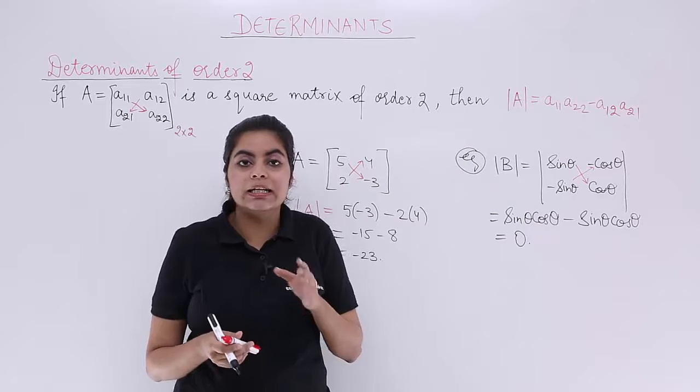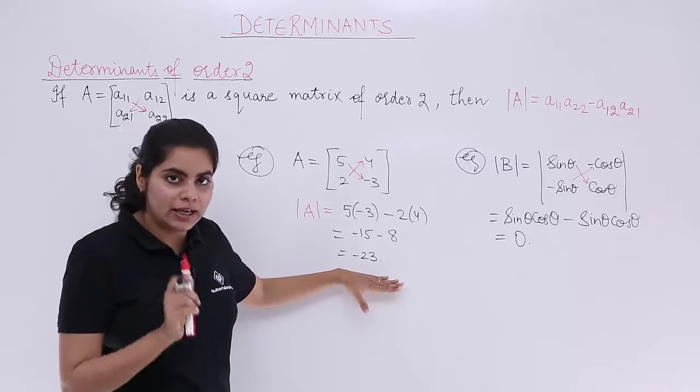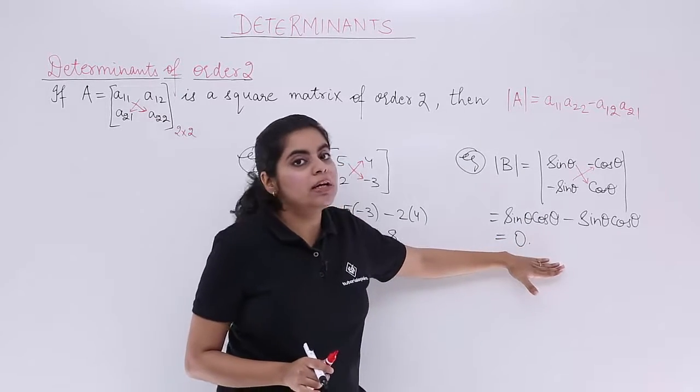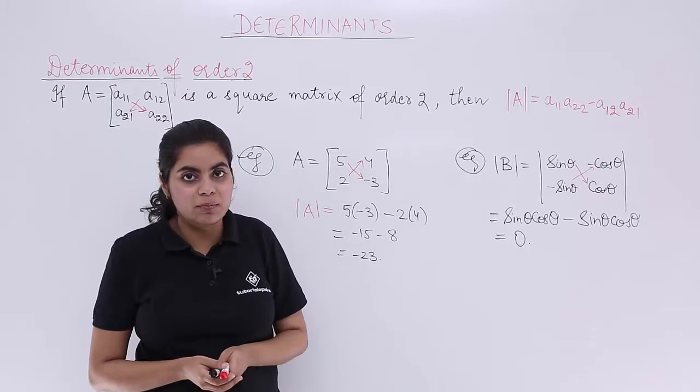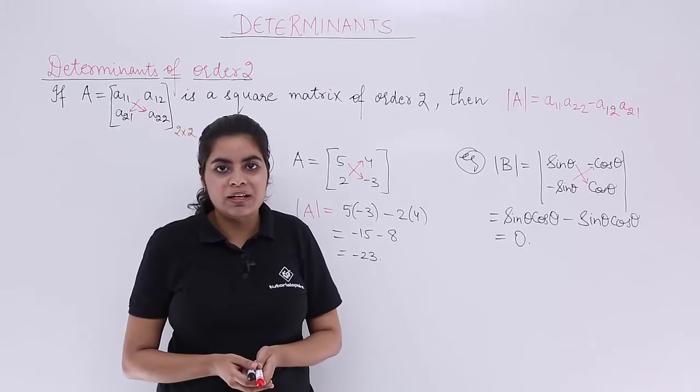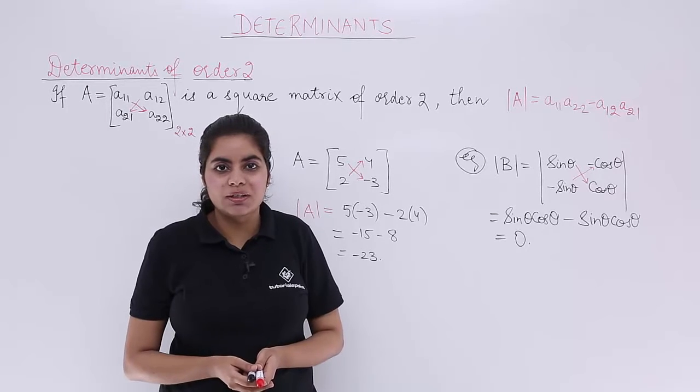So it is not that determinant value cannot be negative. It can be. It is not that determinant value cannot be 0. Any value is possible in the case of determinant. And in this video we complete the determinants of order 2.